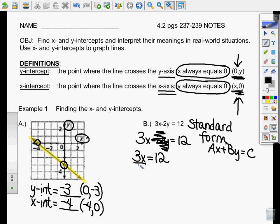So what you're going to do is you're going to divide each side by 3. And that means your x-intercept is 4, or in other words, (4, 0).